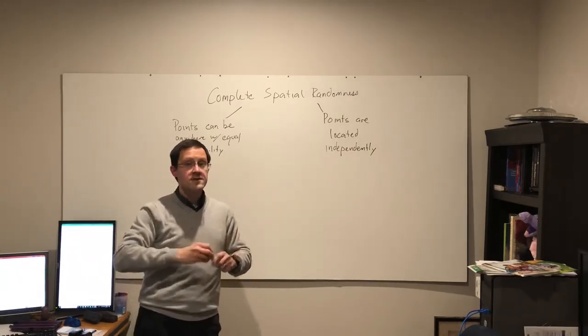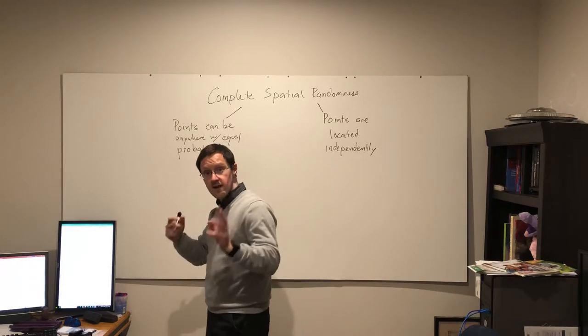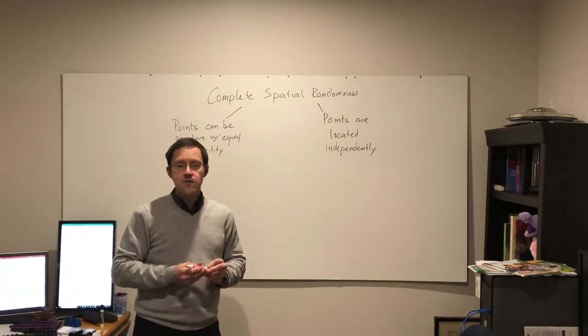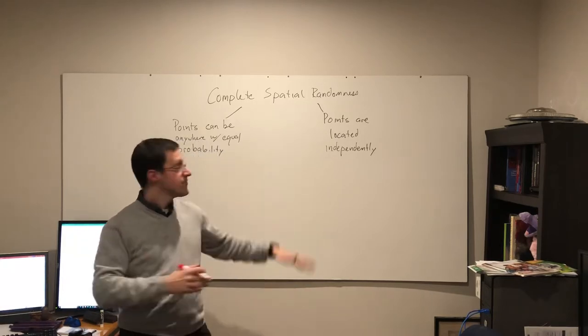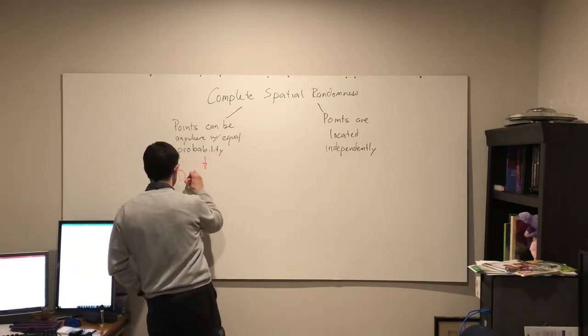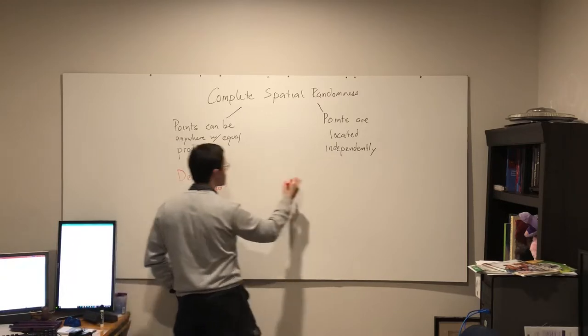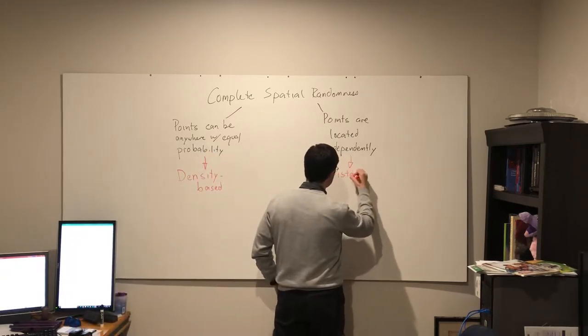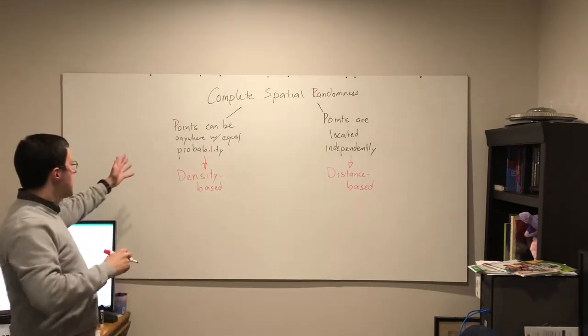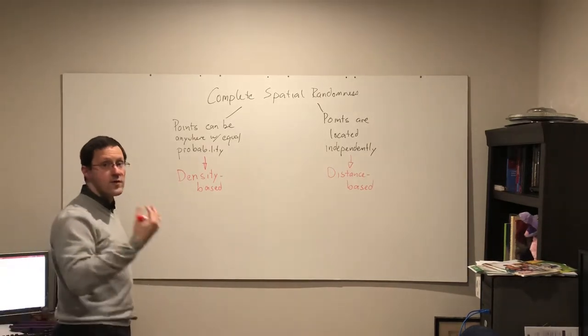So those are the two assumptions for complete spatial randomness. The techniques that we saw for point pattern analysis, we broke it down into two different approaches: density based and distance based. The two different approaches are in fact based upon these two assumptions, where the first assumption of complete spatial randomness leads us to look at density based approaches like quadrats that we saw before spring break.